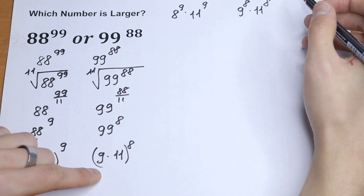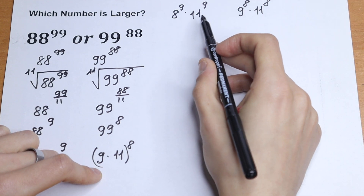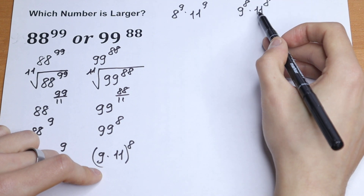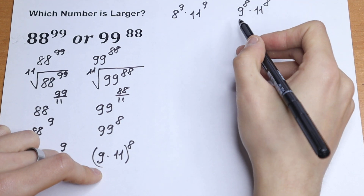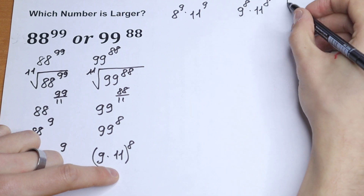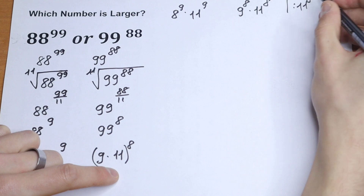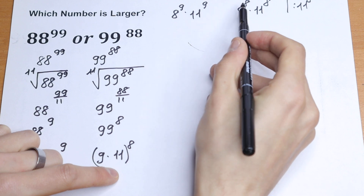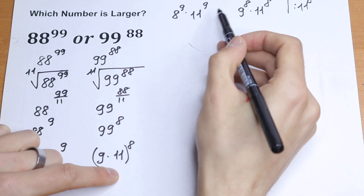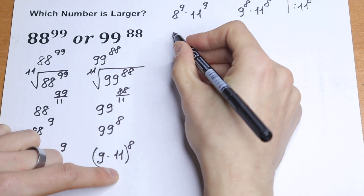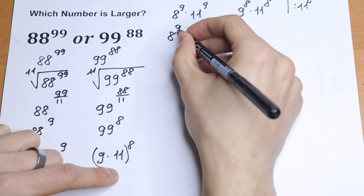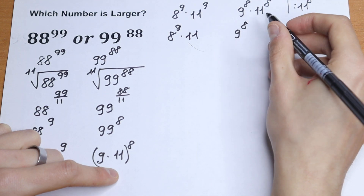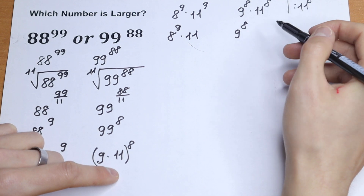Now, on the left we have 11 to the 9th power and on the right 11 to the 8th power. We can divide both sides by 11 to the 8th power. This cancels the 11 to the 8th on the right entirely, and on the left we are left with one factor of 11. So we have 8 to the 9th power times 11 on the left, and 9 to the 8th power on the right.